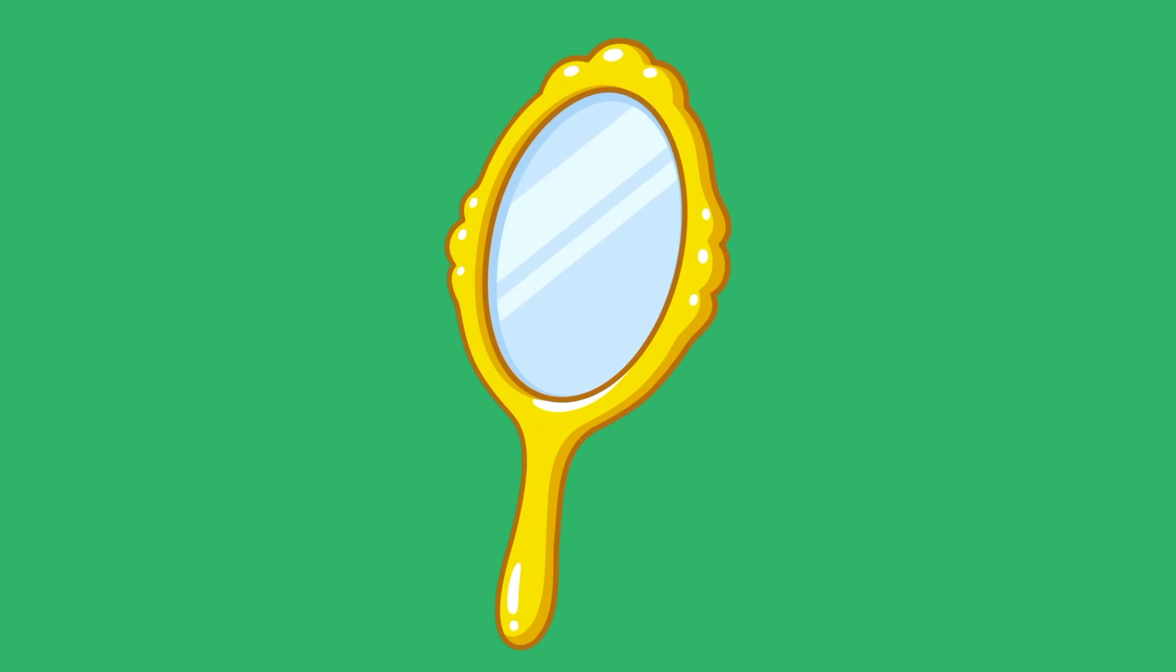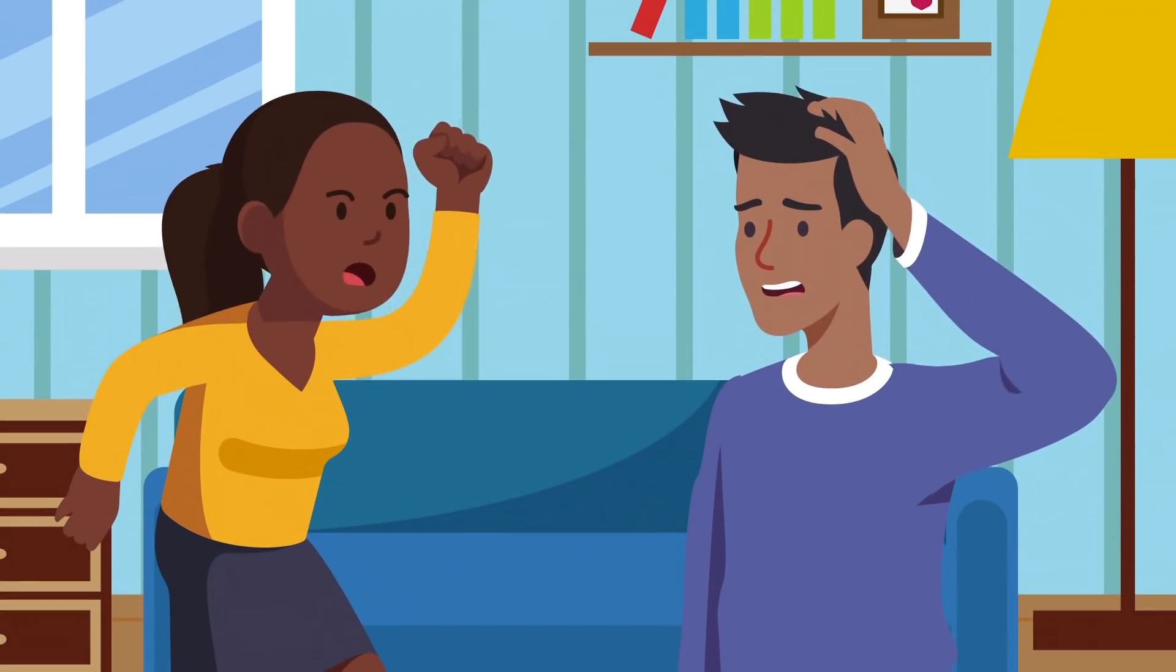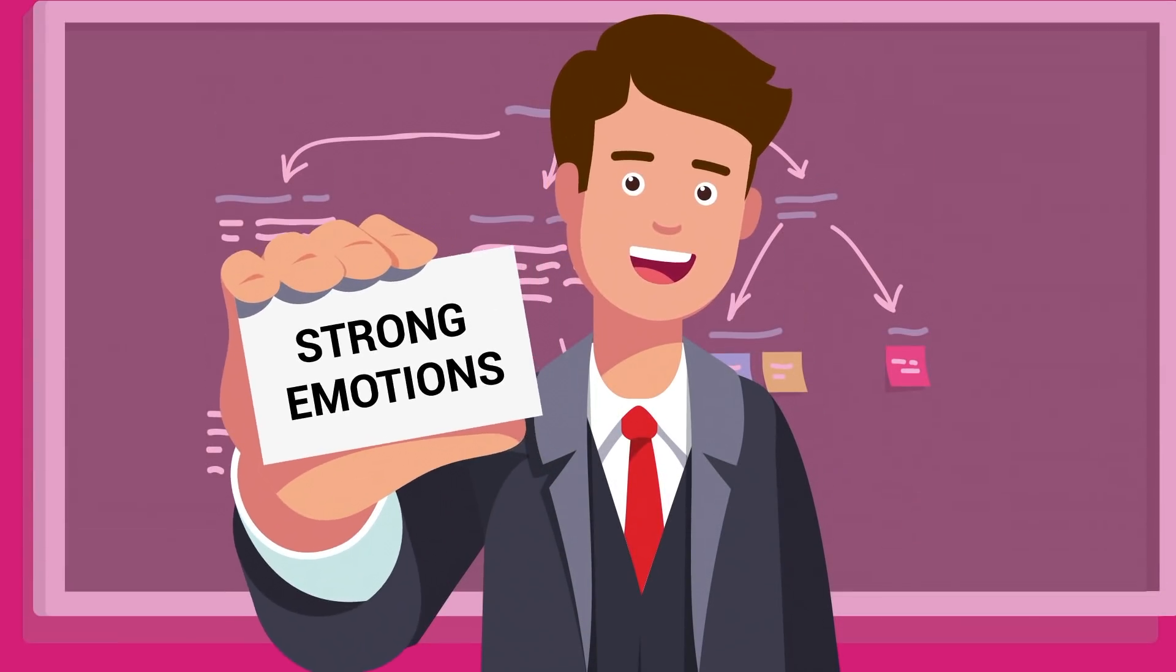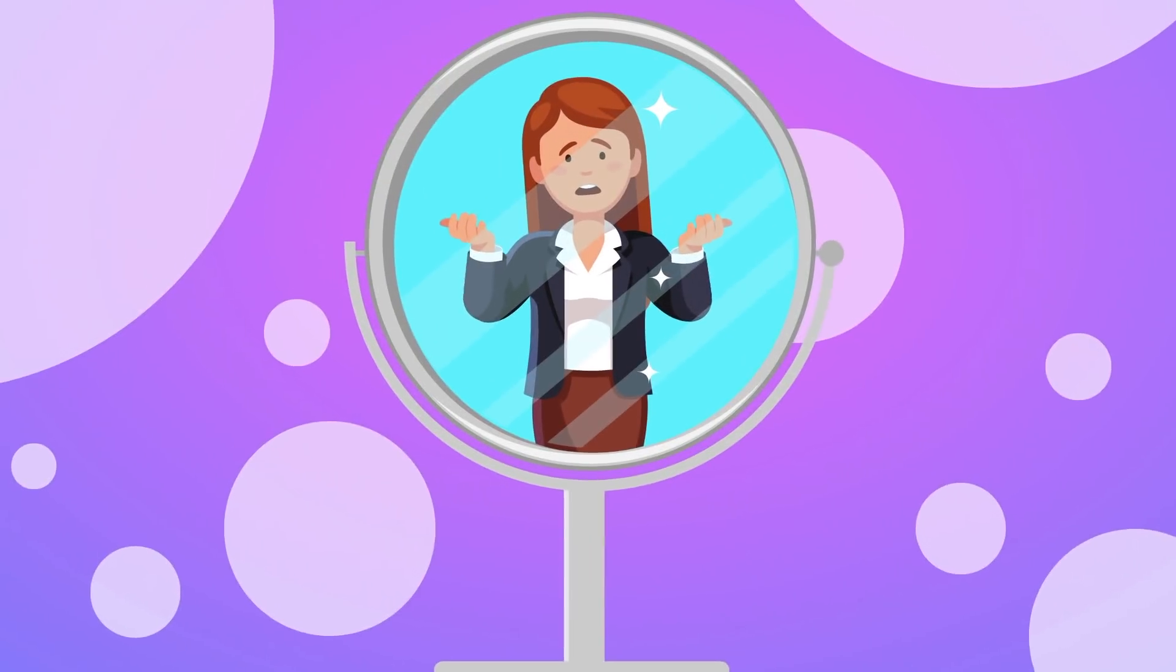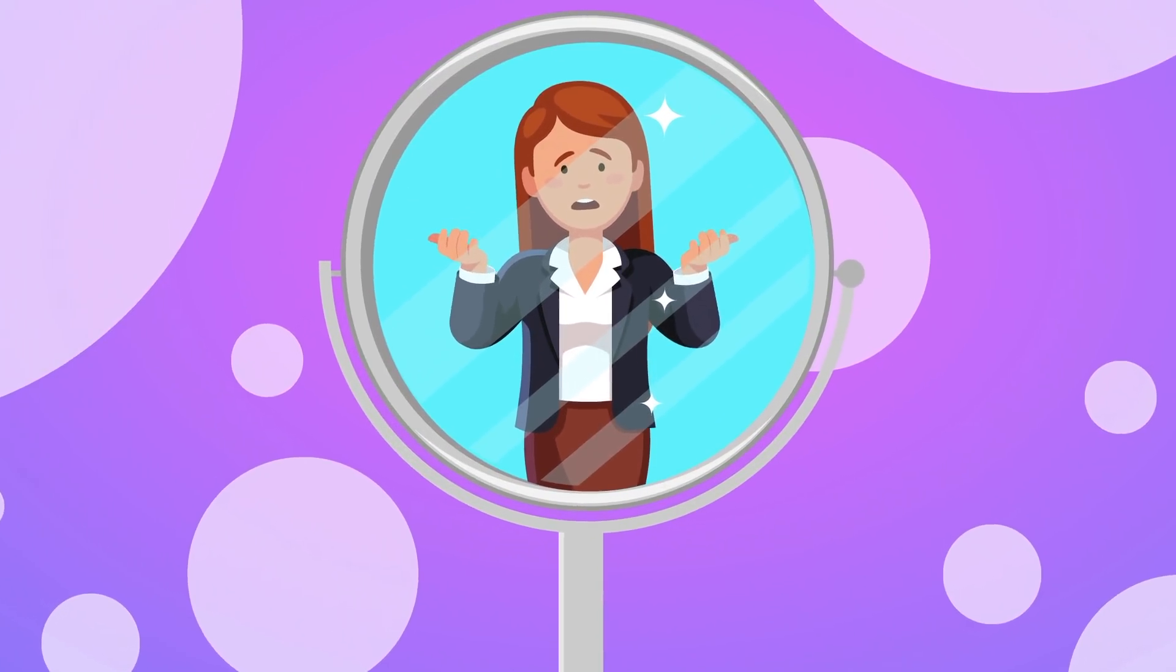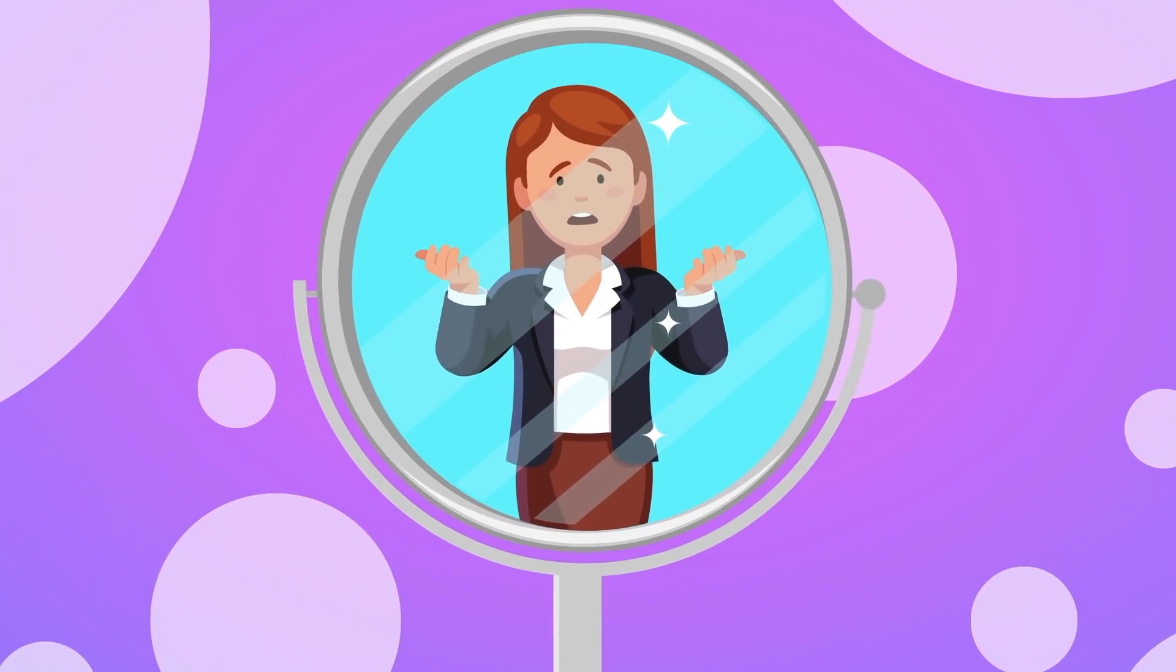Mirrors are an angry person's worst enemy. When you're angry, you don't think about how you seem to the people around you. Your judgment is clouded by strong emotions. But what happens when you see your reflection? Your flustered face, a big frown plastered across your lips. It's not exactly a pretty sight.